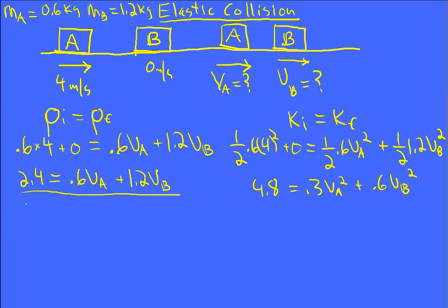And so I'm going to solve the momentum equation, the simpler equation for VA, and then substitute that into the kinetic energy equation. And so you can see VA would be 2.4 minus 1.2 VB all over 0.6. And that gives me, if we simplify that, 4 minus 2 VB.